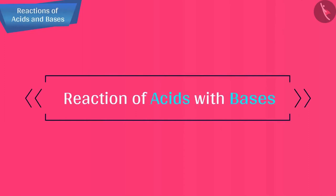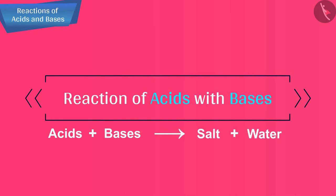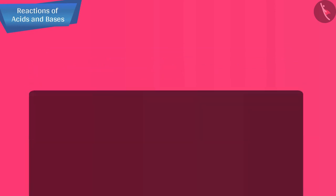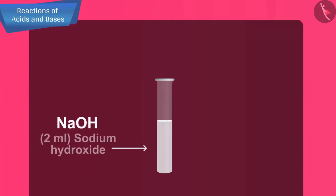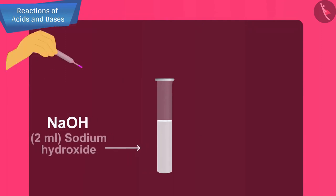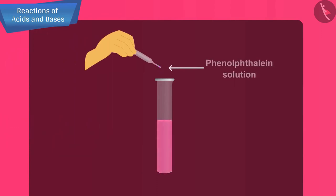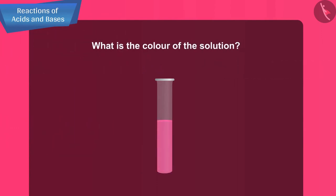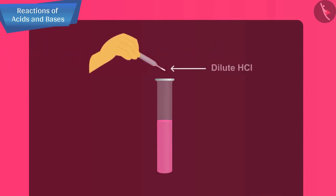Let us now move ahead to the next type of reaction: the reaction of acids with bases. When an acid reacts with a base, a salt and water are formed. To understand this, take about 2 ml of dilute NaOH solution in a test tube and add 2 drops of phenolphthalein solution. The solution will turn pink. Then add dilute HCl solution drop by drop.